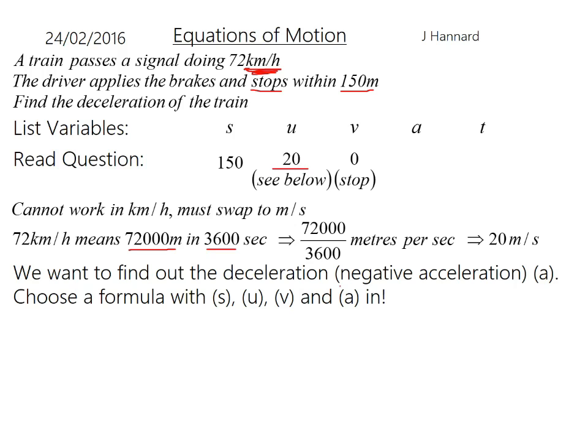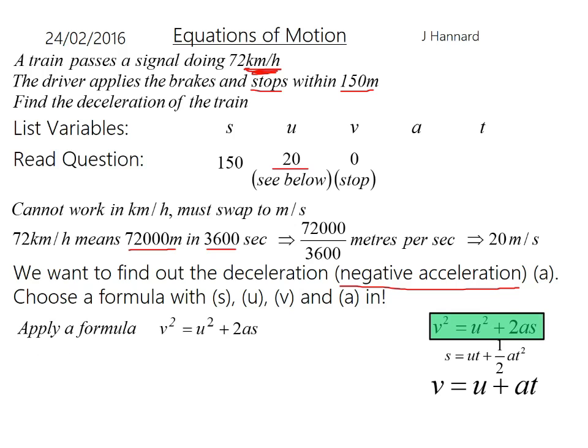Now I'm ready to go. I want to find out the deceleration or negative acceleration. Just use acceleration and stick a negative sign on it. Choose a formula with all of those in, I'm thinking V squared equals U squared plus 2AS. Apply the formula, substitute the numbers in: 0 equals 400 plus 2 times A times 150.